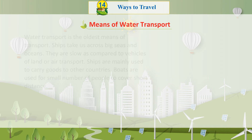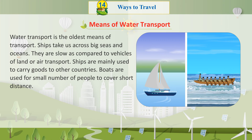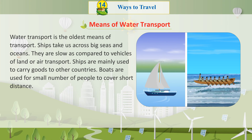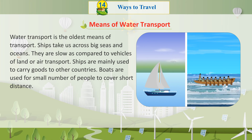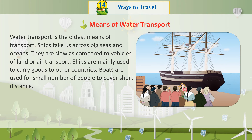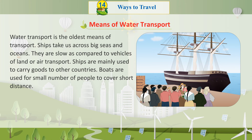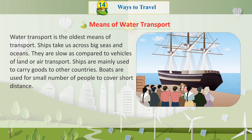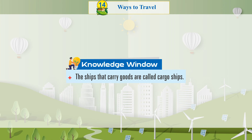Means of water transport. Water transport is the oldest means of transport. Ships take us across big seas and oceans. They are slow as compared to vehicles of land or air transport. Ships are mainly used to carry goods to other countries. Boats are used for a small number of people to cover short distances. Knowledge Window: The ships that carry goods are called cargo ships.